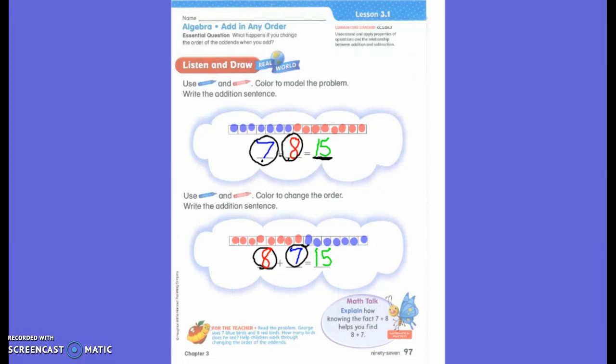So, no matter which way we did it, neither one of these is wrong. It still shows us that George saw seven blue birds and eight red birds. So I could have done it either way. So if I did it this way, but my partner did it this way, is one of us wrong? No. We could have done it either way. It's okay.